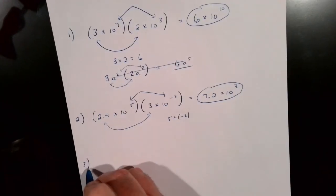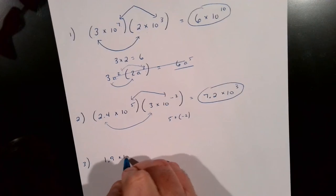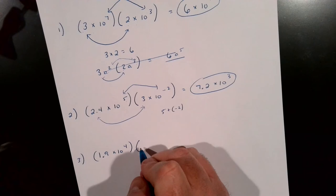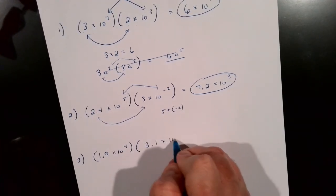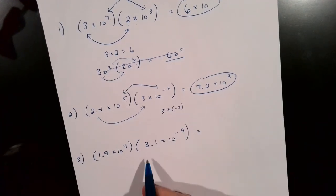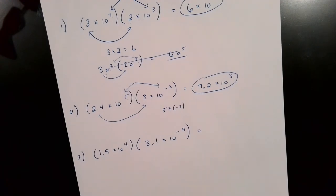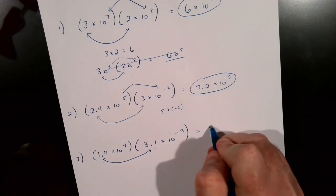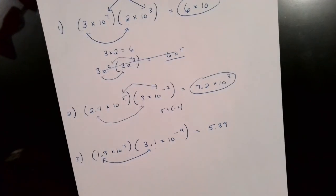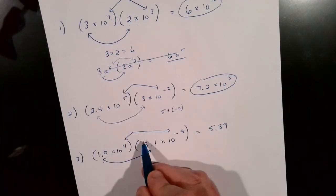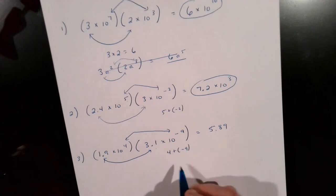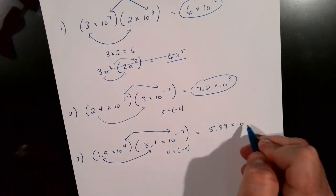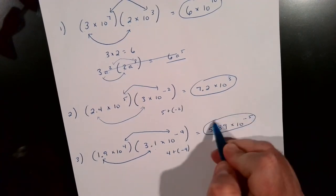I want you guys to try one. Let's say we have 1.9 times 10 to the 4th, and we times that by 3.1 times 10 to the negative 9th power. Use your calculator — we simply times those first two numbers together: 1.9 times 3.1 gives 5.89. And then for the exponents, we add 4 plus a negative 9, and we end up with 10 to the negative 5th. It's okay that the answer has a negative exponent.